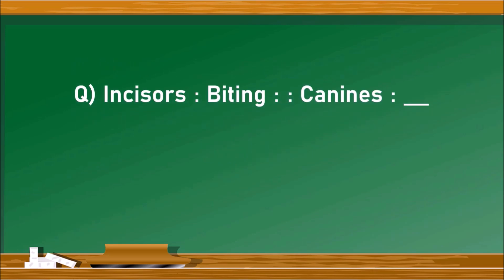Next question. Incisors is to biting, so as canines is to? It means incisors are useful for biting the food, whereas canines are useful for tearing the food.